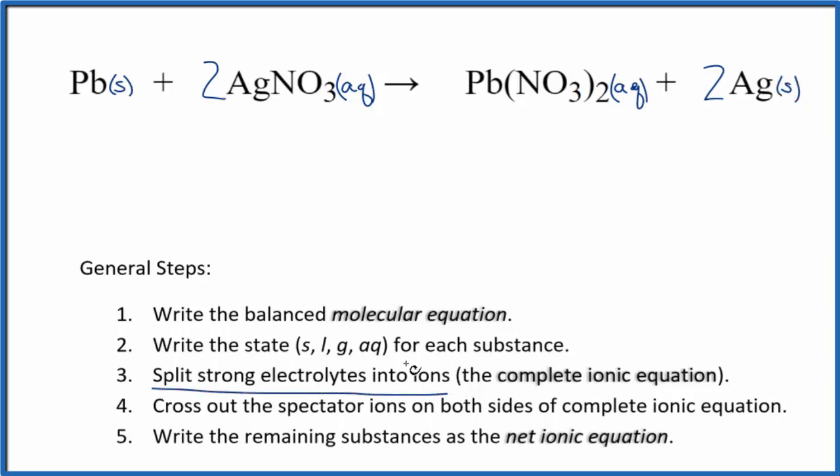Now we can split the strong electrolytes into their ions for the complete ionic equation. Lead, because it's just by itself, stays as Pb. I'll write the states later. For silver, it is a transition metal but it's always 1+. The whole nitrate ion is 1-, that's a good one to remember. So we have 2 Ag+, two silver ions, and then two of the nitrate ions as well.